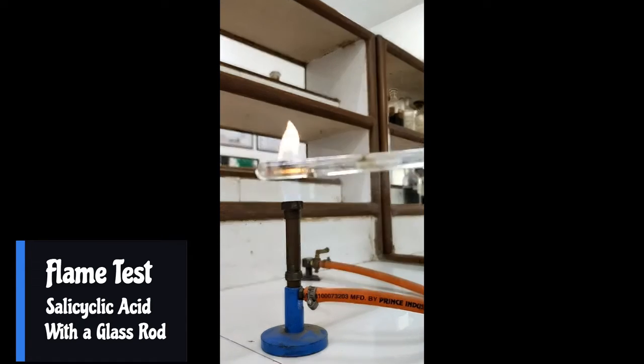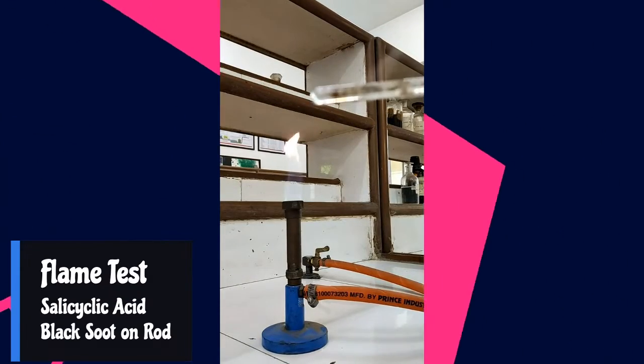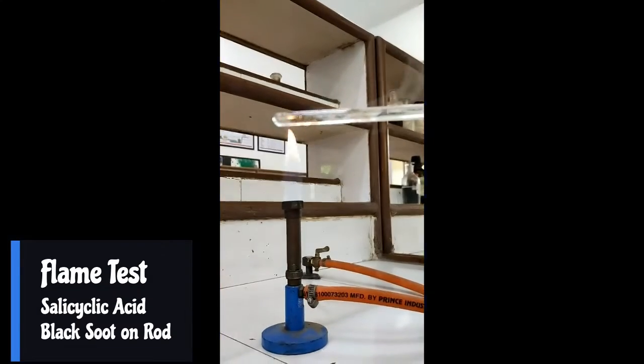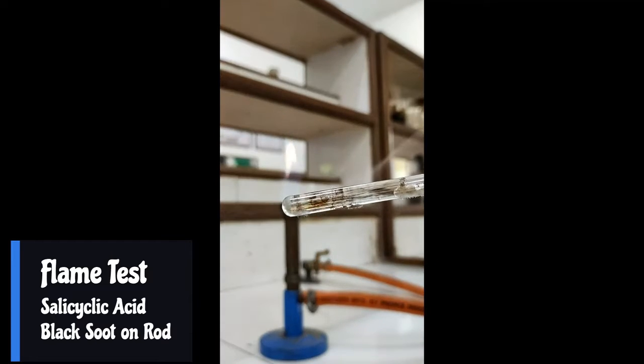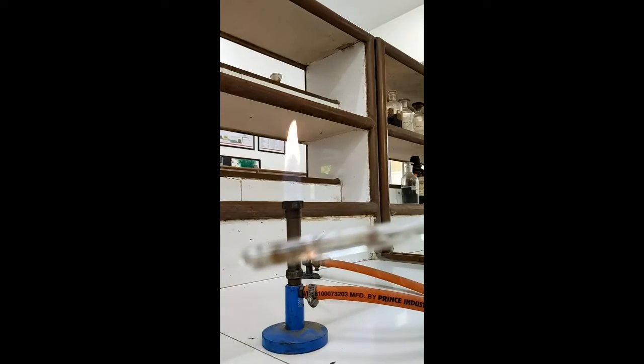If a sooty flame is there or the compound becomes black and gets deposited on the rod, then that compound would be aromatic in nature. So if the compound is salicylic acid, you will observe this kind of black soot.